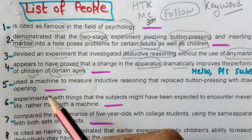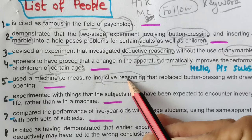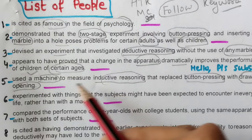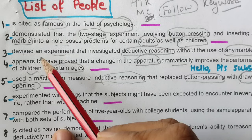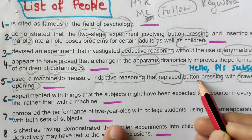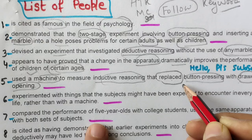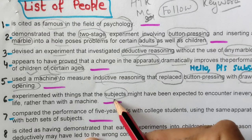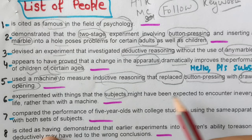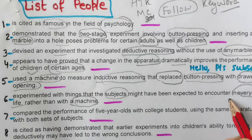Question 4: 'appears to have proved that a change in apparatus dramatically improves the performance of children of certain ages' — keyword: certain ages. Question 5: 'used a machine to measure inductive reasoning.' Question 6: 'replaced button pressing with drawer opening.' Question 7: 'experimented with things that subjects might have been expected to encounter in everyday life rather than a machine.' Question 8: 'cited as having demonstrated that earlier experiments into children's ability to reason deductively may have led to the wrong conclusion.'